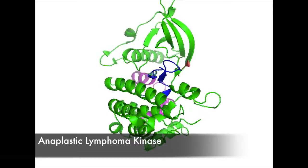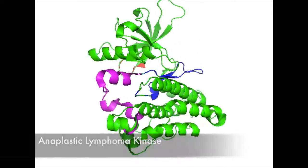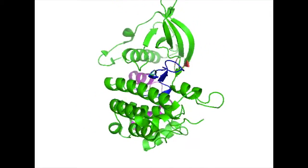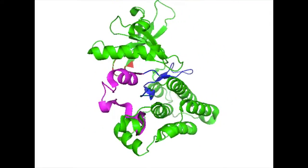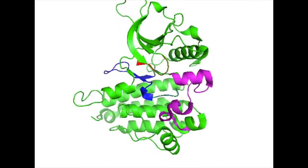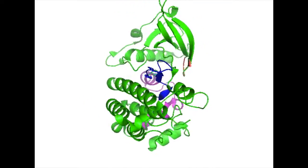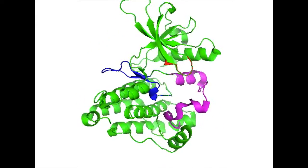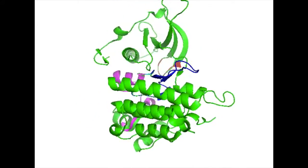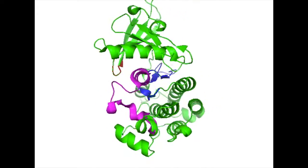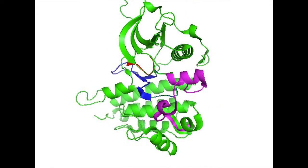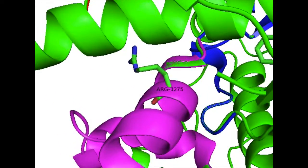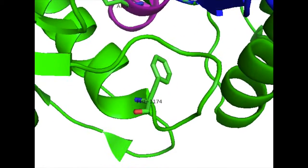This model shows anaplastic lymphoma kinase and its catalytic protein kinase domain. Secondary structures in this domain include: one, a glycine-rich ATP binding loop shown in red; two, a catalytic loop shown in blue; and three, an activation segment shown in purple, all of which help stabilize and bind ATP via salt bridge formation and hydrophobic interactions. Within the protein kinase domain are two residues of interest: arginine-1275 and phenylalanine-1174.